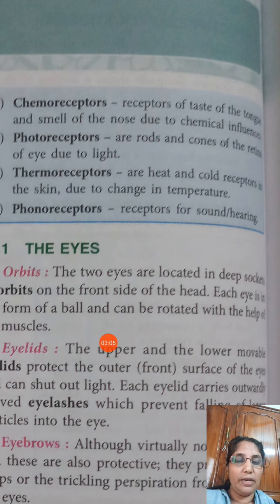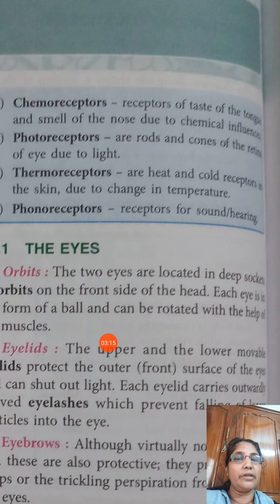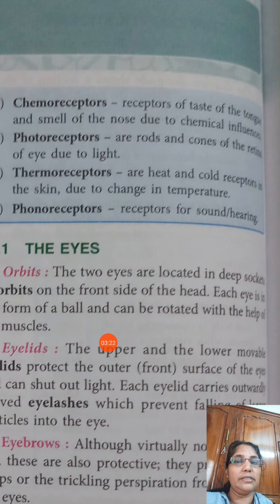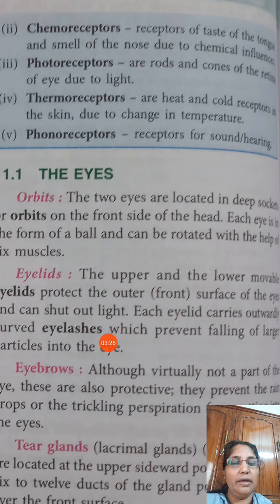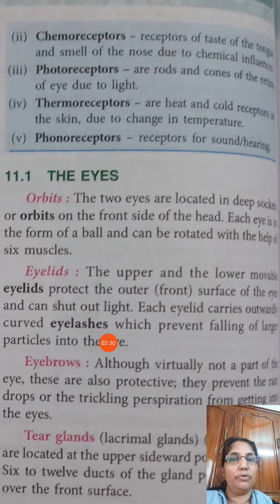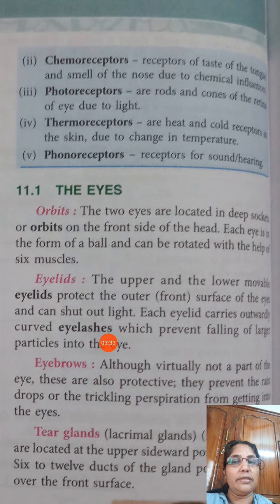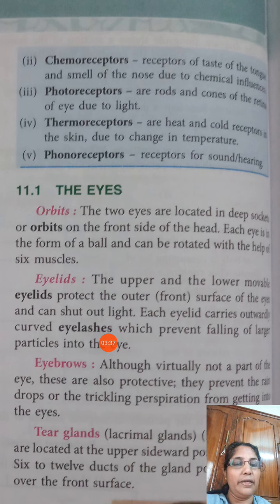Then thermoreceptors — heat and cold receptors are present in the skin. Then phonoreceptors — 'phono' meaning sound — that is present in the ear. Our brain can make us informed about different kinds of sound. Then again, the eyes are protected in a deep socket present in the front side of our head, in the skull.